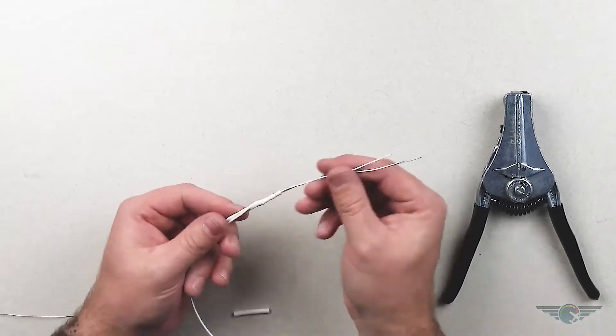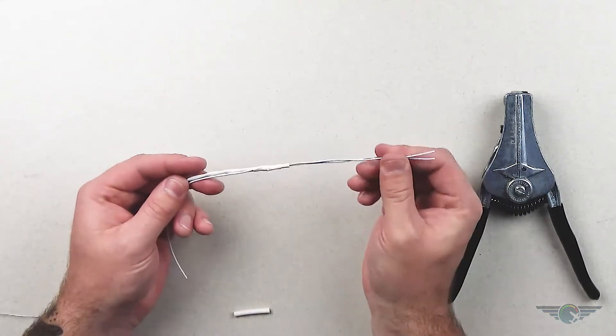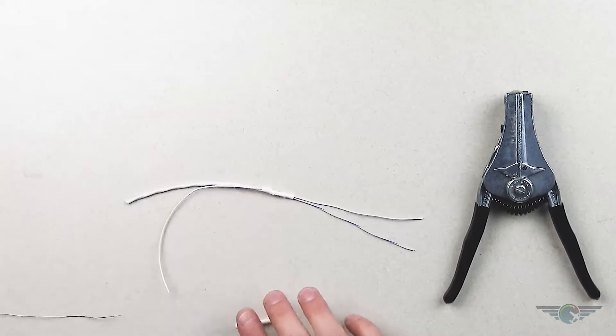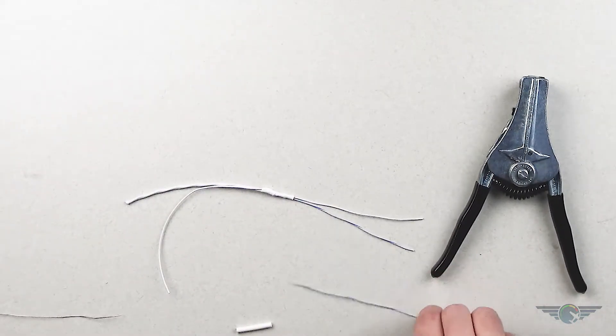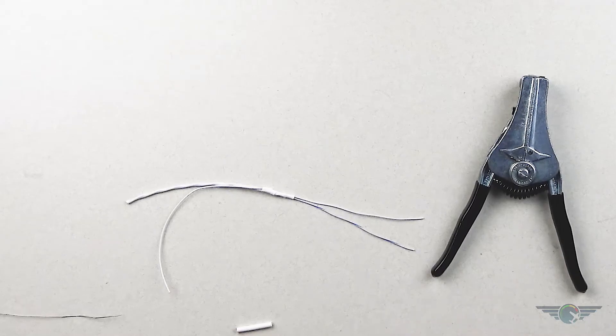So you notice here that I cut these pretty long. We want those pretty long and I'll show you why here in a minute. So we've got a piece of heat shrink, another piece of matching wire on the positive side of my CAN bus and then my wire strippers here.